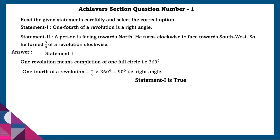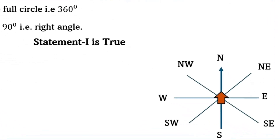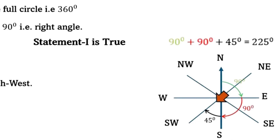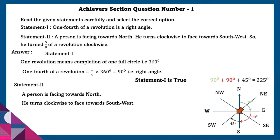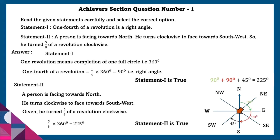Statement 2: A person is facing towards north and turns clockwise to face towards southwest. Over here, 90 plus 90 plus 45 is equal to 225 degrees, that is 5/8 of a revolution. So statement 2 is also true.